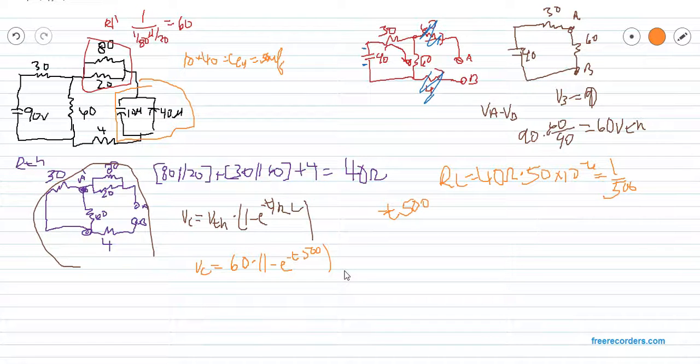Okay, and then the second part of the problem, your current, IC, is equal to E over R times E to the negative T over RC. We already know all of this, so it's easy to plug in. We know that that is 60 over 40 times E to the negative 500 T. And those are your equations.